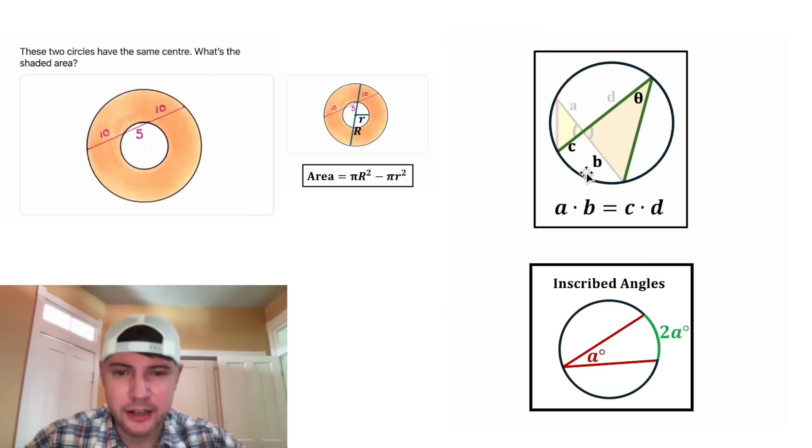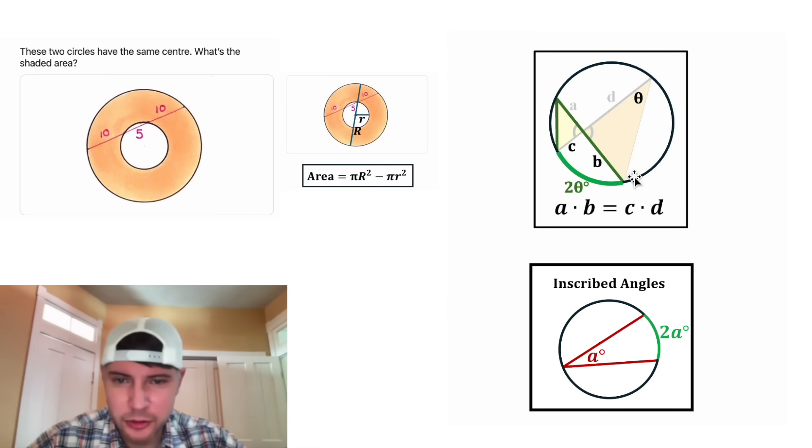And that'll be true for any inscribed angle, including this one here. If this inscribed angle subtends this 2θ arc, it's going to be half of 2θ, or θ. Since these two angles subtend the same arc, they are congruent, and let's mark both these thetas as congruent.